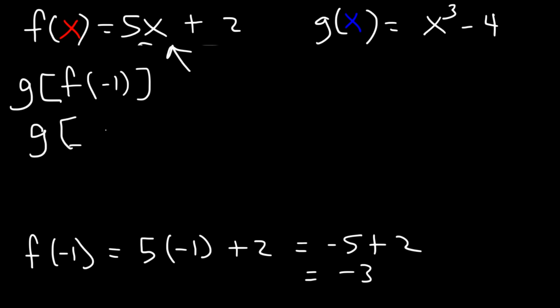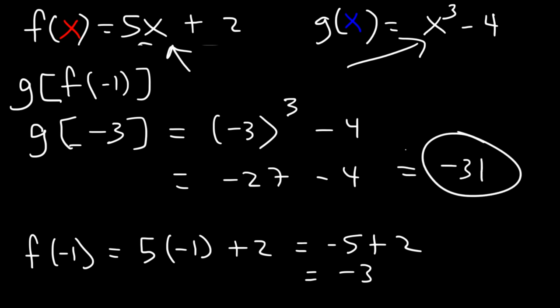So f of negative 1, we can replace it with negative 3. Now we're looking for g of negative 3, which we can plug in here. It's negative 3 to the third power minus 4, which is negative 27 minus 4. The final answer is negative 31. That's how you can evaluate composite functions.